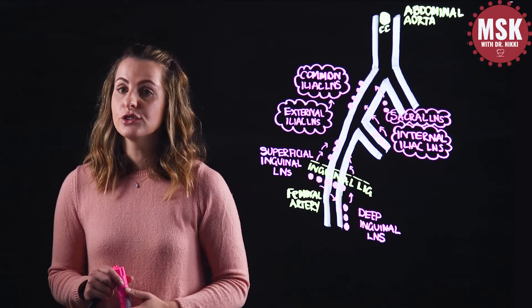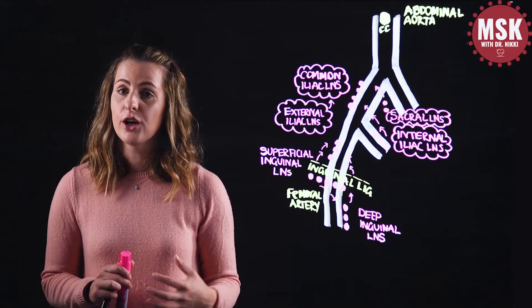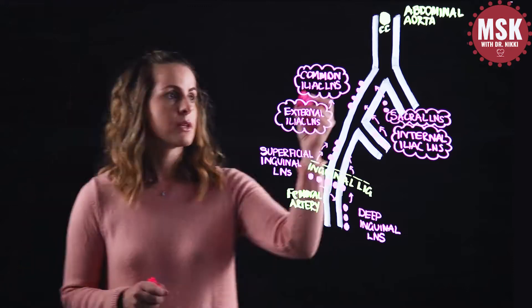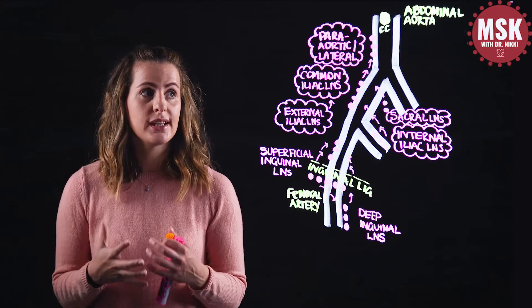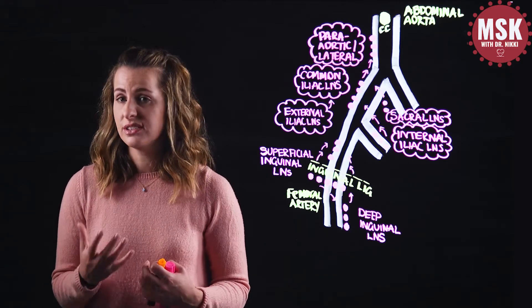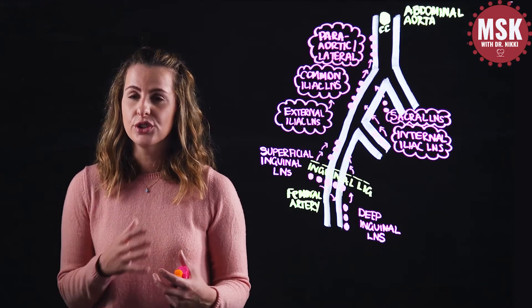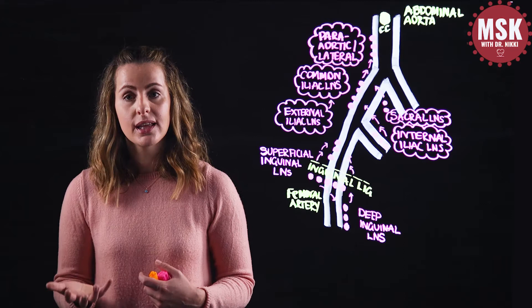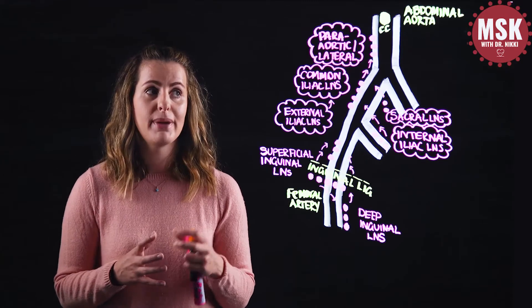The efferent drainage from the common iliac lymph nodes goes to the para-aortic lymph nodes. The para-aortic lymph node group is part of the lumbar trunk and is located just lateral to the abdominal aorta. Also called the lateral lymph nodes, they drain directly into the cisterna chyli at the L1-L2 vertebral level. The para-aortic lymph nodes are roughly at L2-L3 and receive drainage from the common iliac nodes, but there is also a unique set of structures that drain directly into the para-aortic nodes.